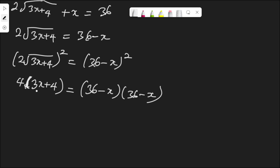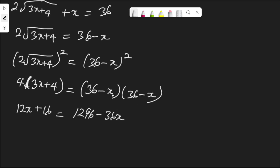Distributing the left side: 4 times 3s is 12s and 4 times 4 is 16. On the right side: 36 times 36 is 1296, then 36 times negative s is negative 36s, negative s times 36 is another negative 36s, and negative s times negative s is positive s squared.